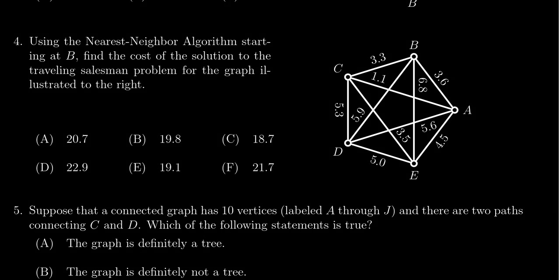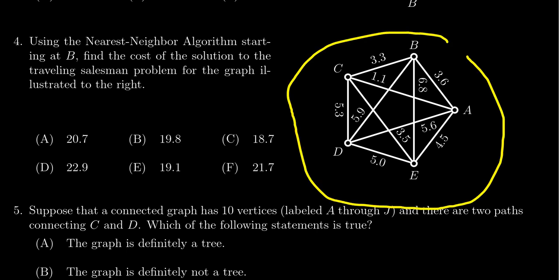In this video, we provide the solution to question number four for practice exam number one for math 1030. We're given here a weighted complete graph and we're asked to solve the traveling salesman problem on this graph using the nearest neighbor algorithm starting at B.